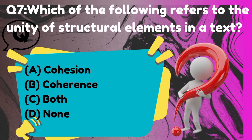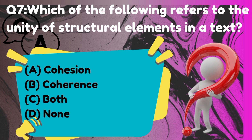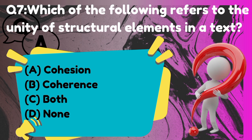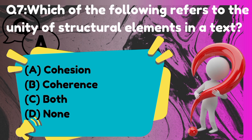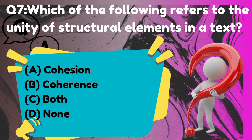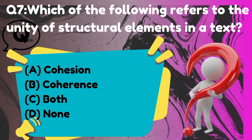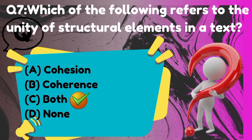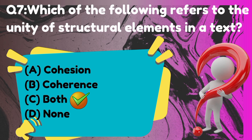Which of the following refers to the unity of structural elements in a text? The correct answer is option C: both A and B.